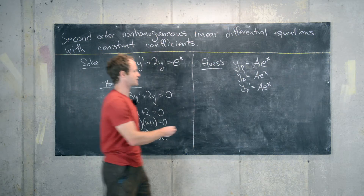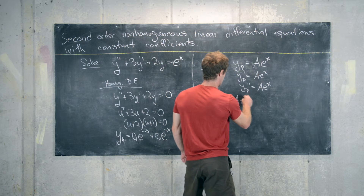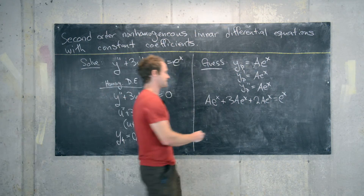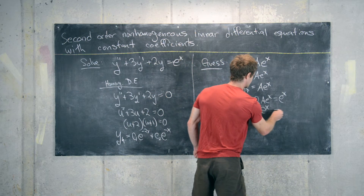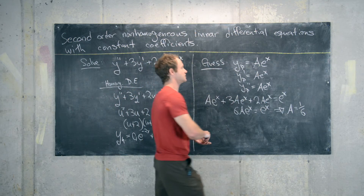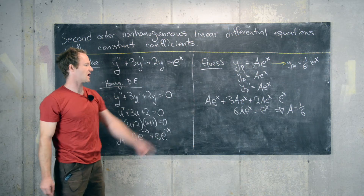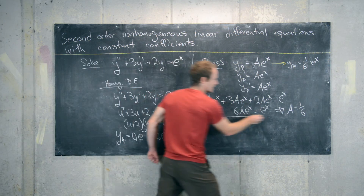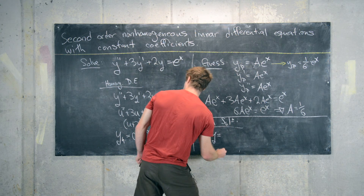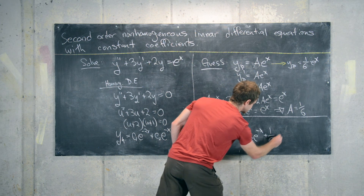If we plug this into the original differential equation, we get A e to the x plus 3A e to the x plus 2A e to the x equals e to the x. That gives us 6A e to the x equals e to the x, which tells us A equals 1 over 6. So our particular solution is 1 over 6 e to the x. From before, the general solution is made up of the homogeneous part and the particular part, giving y equals c1 e to the minus 2x plus c2 e to the minus x plus 1 over 6 e to the x.